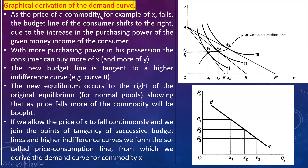As the price of a commodity X falls, the budget line of the consumer shifts to the right due to an increase in purchasing power with the money income of the consumer. If AB is the initial budget line, due to the fall in price of X, the budget line will shift right to AB dash. This is the new budget line after the fall in price.